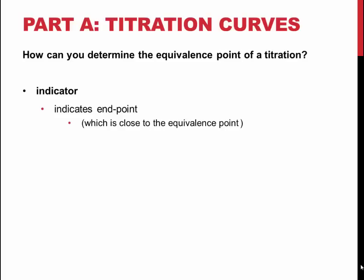First is using an indicator. As you know, this is an equilibrium solution which has a conjugate acid-base pair which are different colors. The point where the solution changes color, where the pH of the solution equals the pKa of the indicator, is the endpoint of the titration.